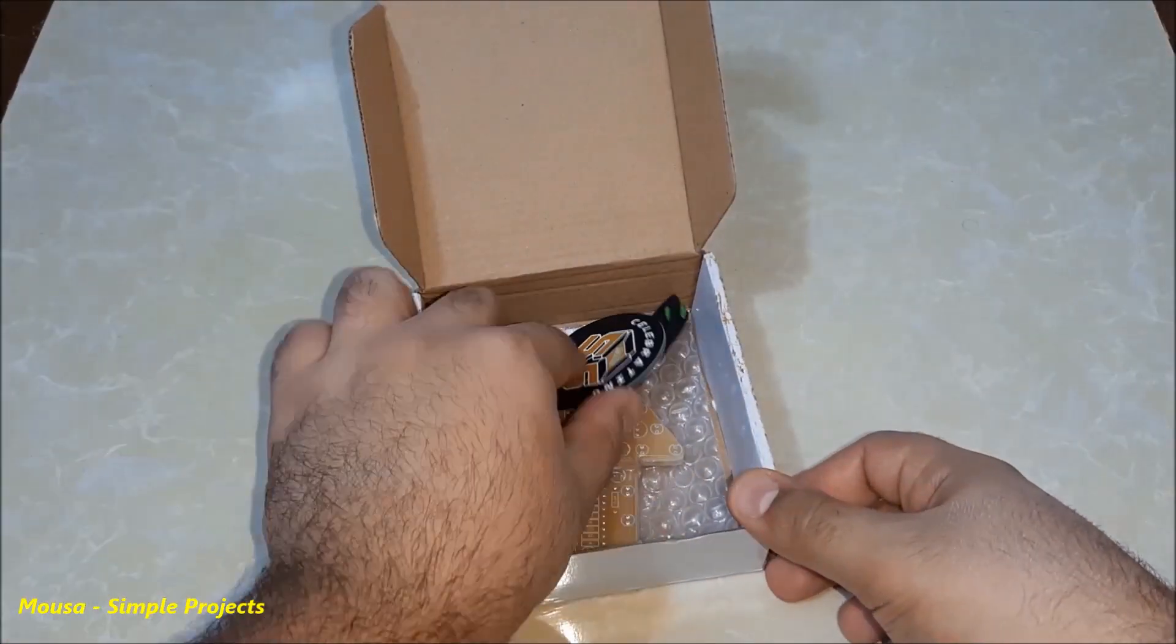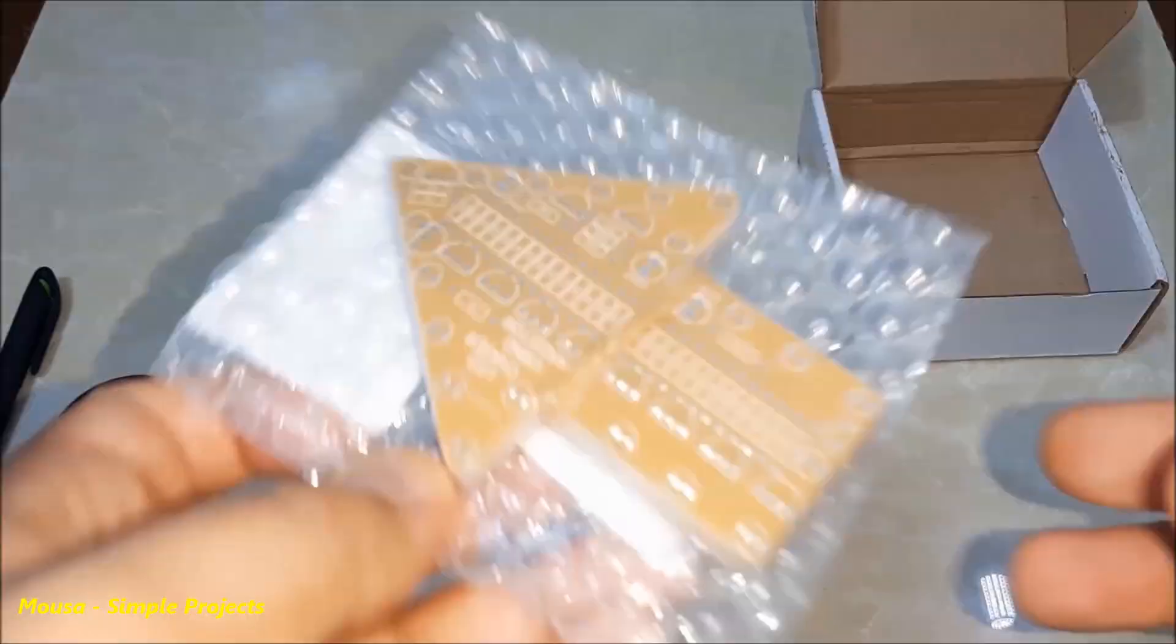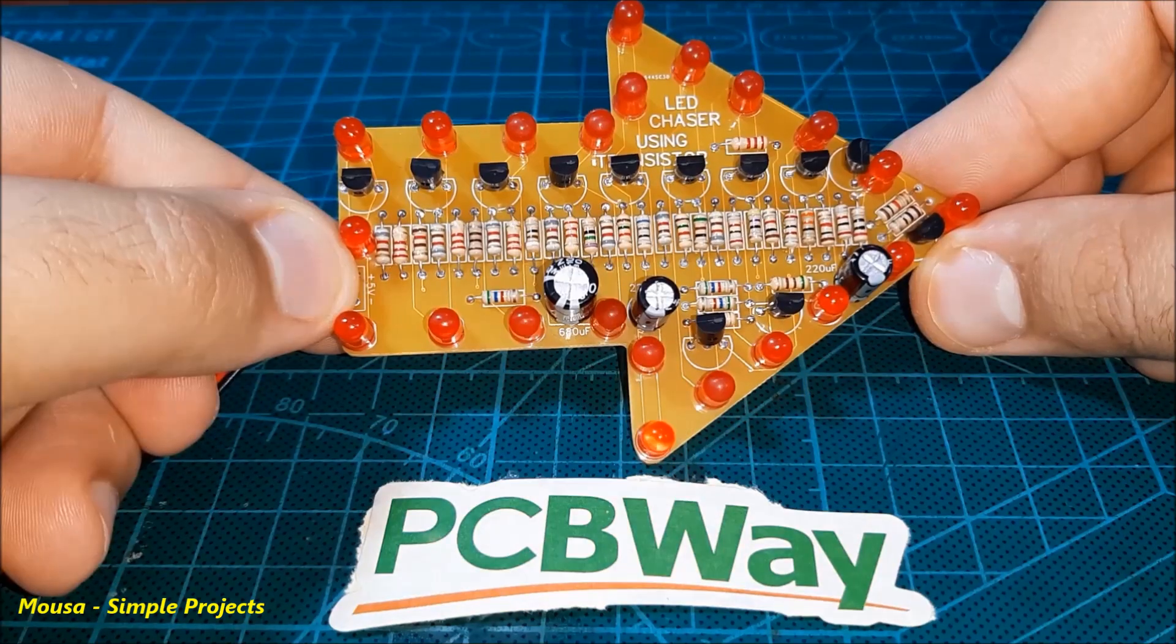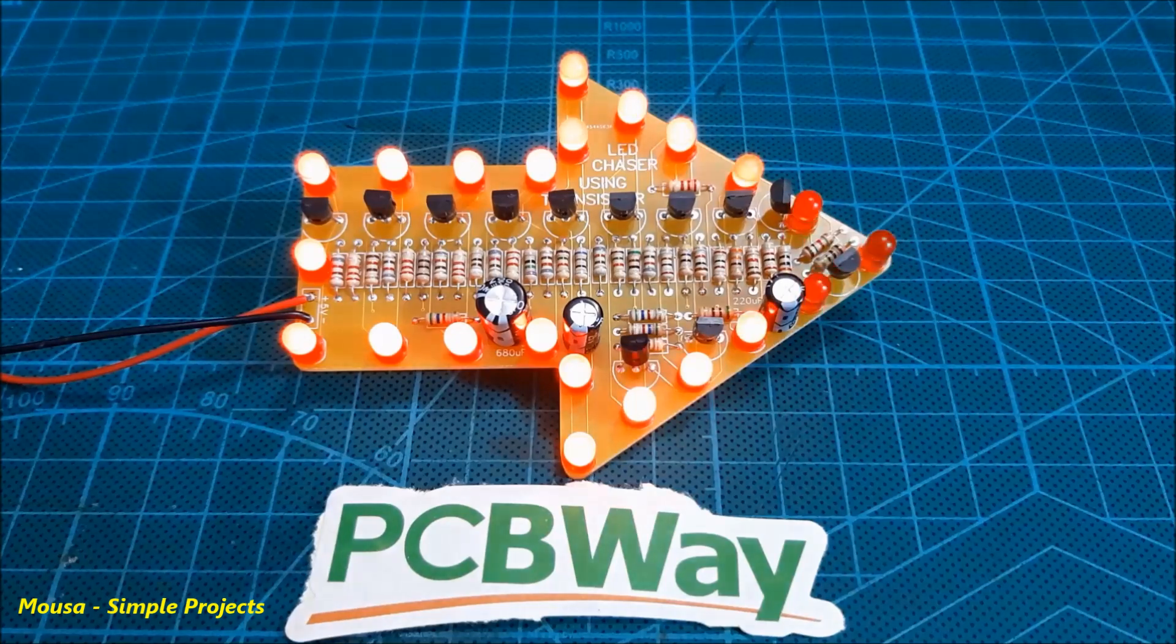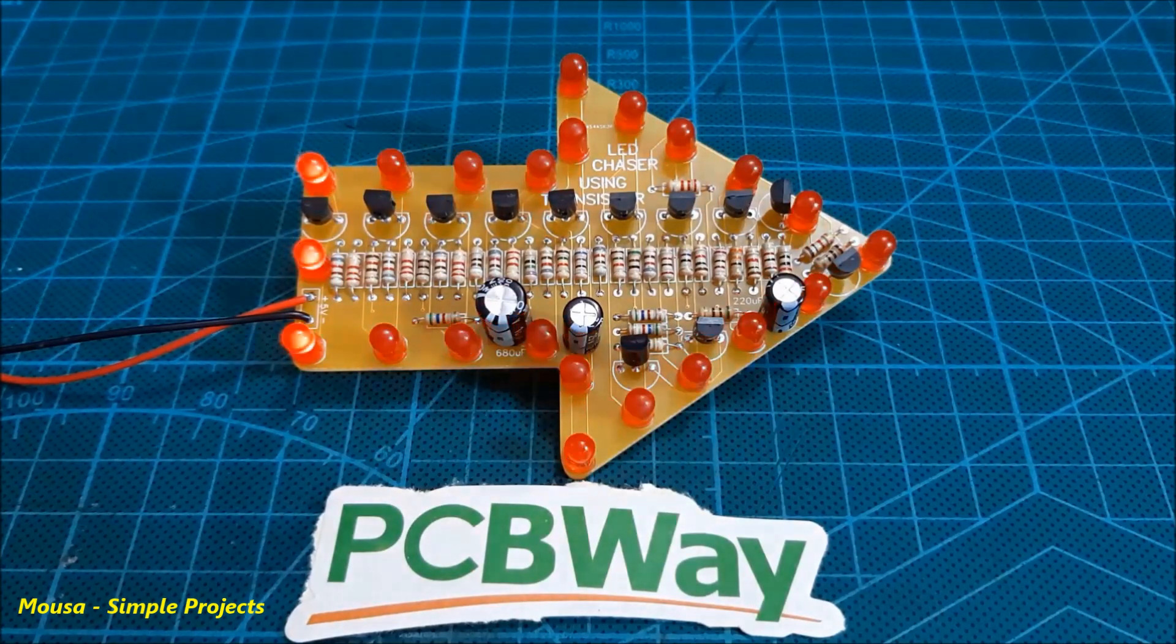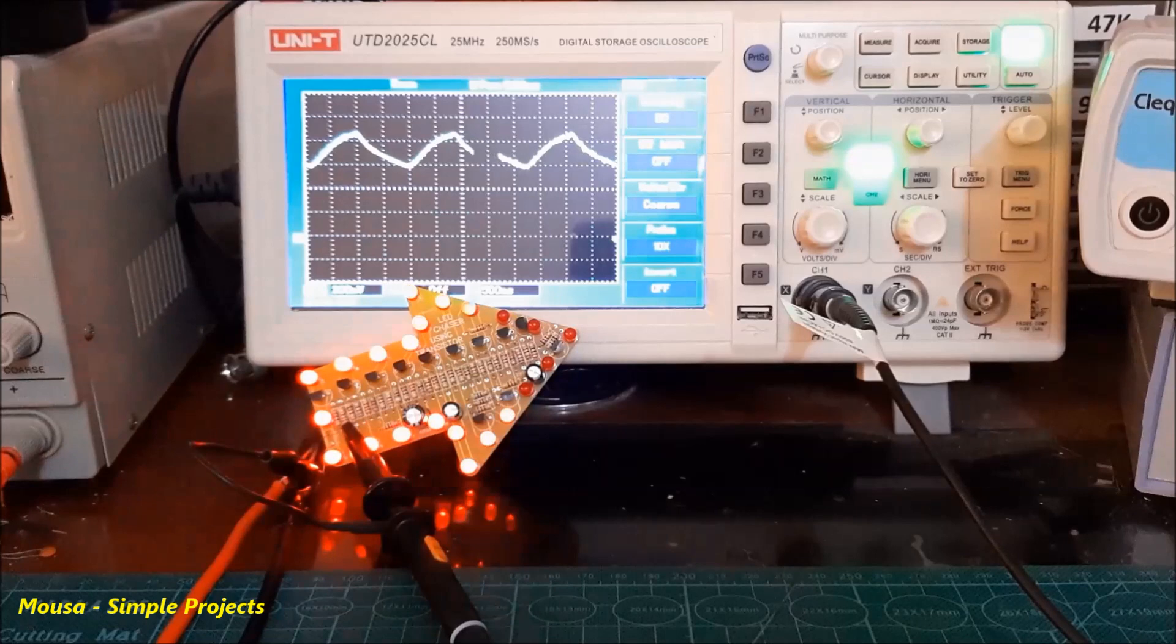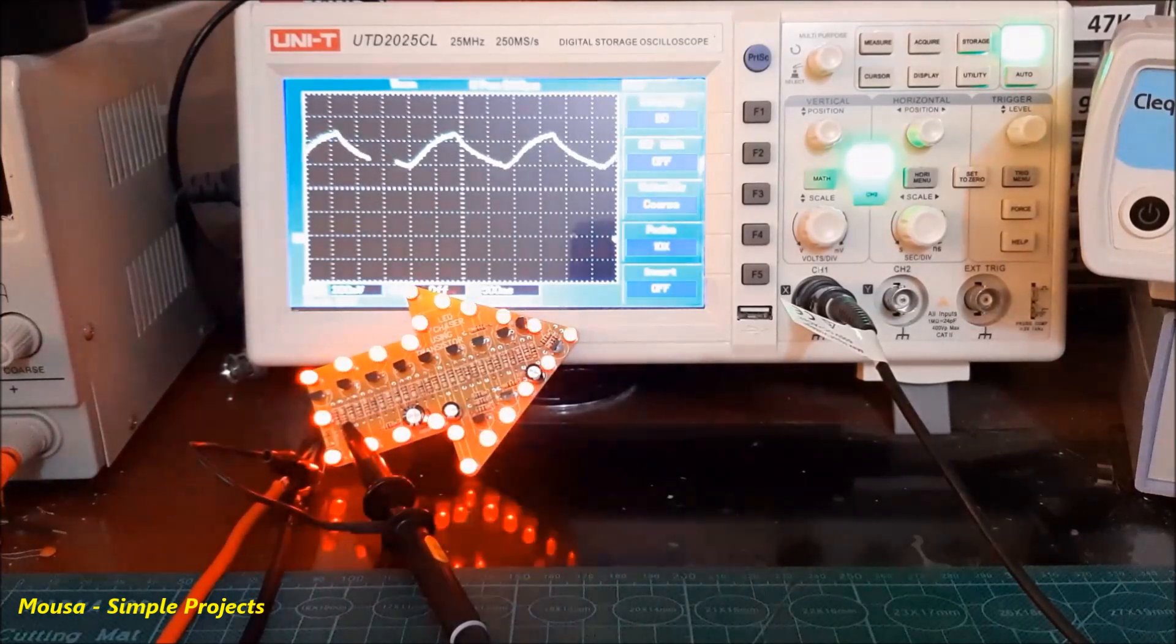After about two months I received my package. Then I soldered the components on the PCB. I'm running the circuit with 3 volts and as you can see it's working. You can order this circuit from PCBway.com. I put the link below in the description.